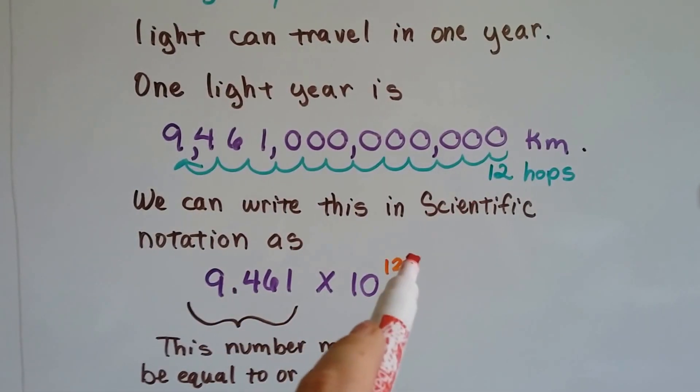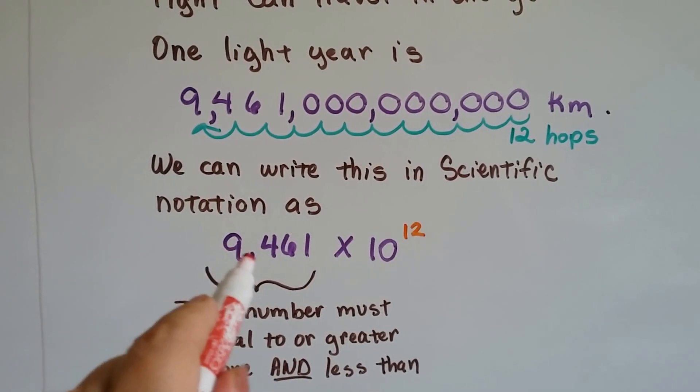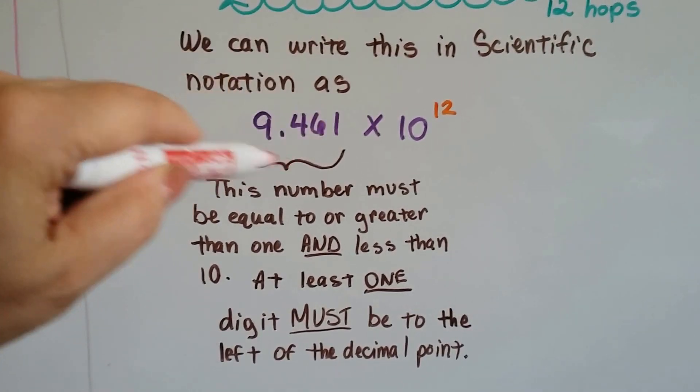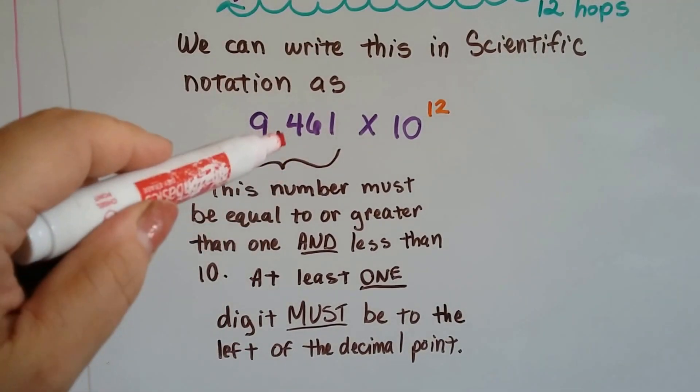Because we did 12 hops, that's our exponent. We made sure there was one digit in front of the decimal point. This number right here must be equal to or greater than 1 and it should be less than 10.